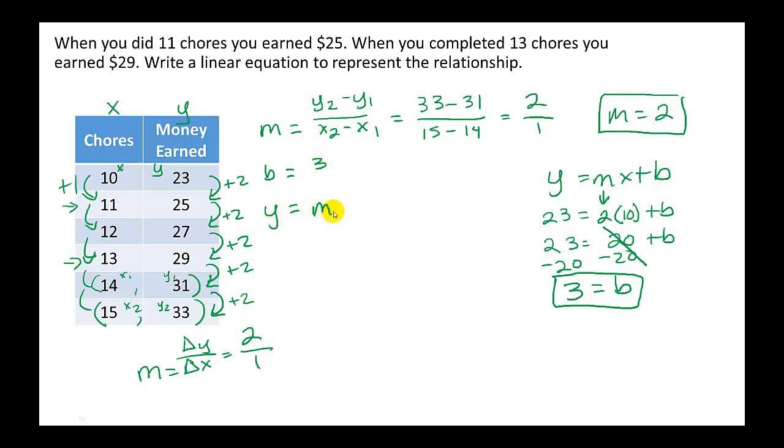So y equals mx plus b we now know m we know b we can plug them in y equals 2x plus 3. We're saying our beginning amount when x is 0 we haven't done any chores you're going to get paid 3 dollars and then as we increase on the chores we're going to get 2 more dollars. That is what this equation is telling us based on our context and our table.